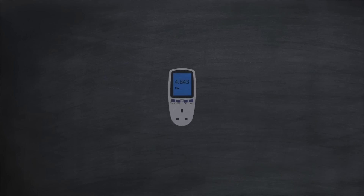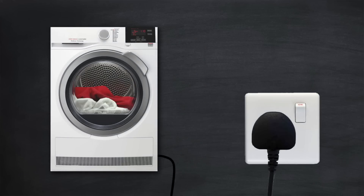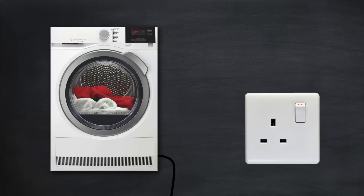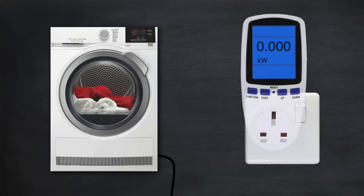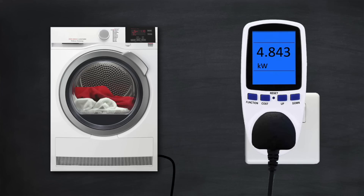There are a few ways to find out how much your own appliances use. The first is a device like this one, which you can buy online for about £20 to £30. Just unplug the appliance you want to test, plug in the monitoring device, and then plug the appliance back in on top. Press the function button until the screen shows kilowatts. Simply switch on the appliance and read the power value from the screen. In this example, the power is nearly five kilowatts.